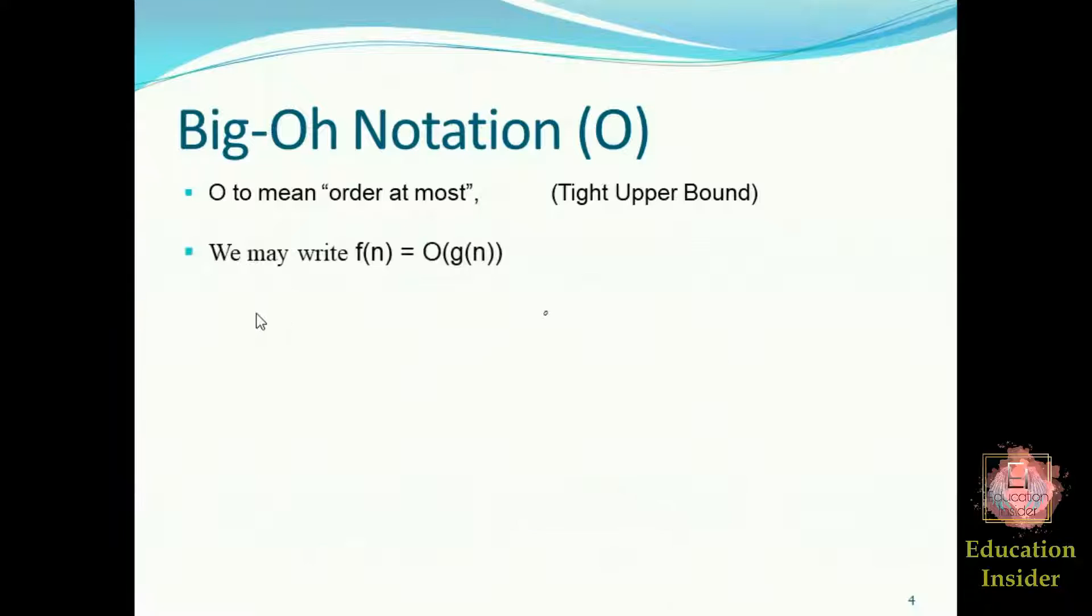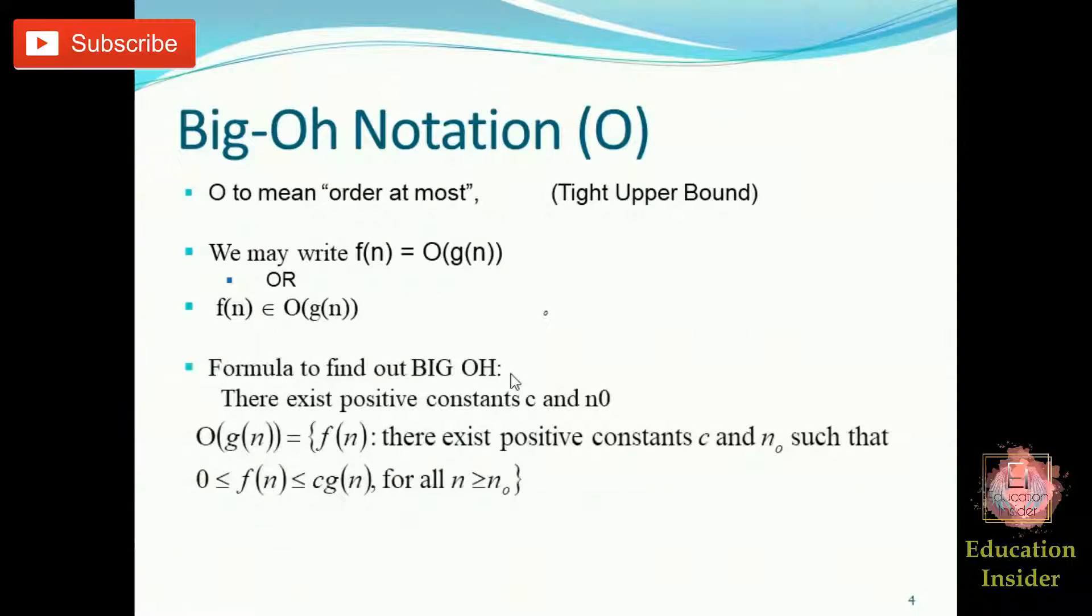We can write f(n) equals Big O of g(n), or f(n) is element of Big O of g(n). This formula for finding out Big O: we need to find out values of c and n₀.